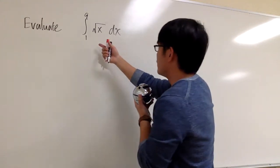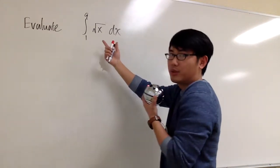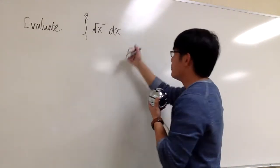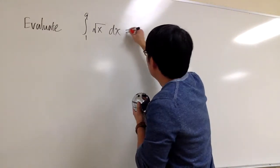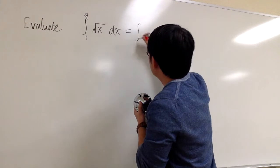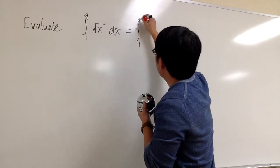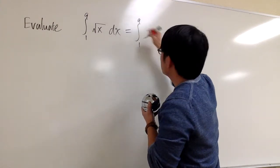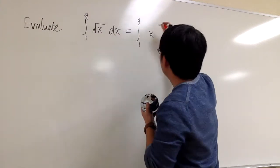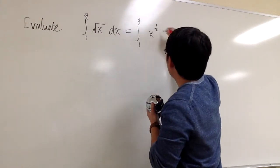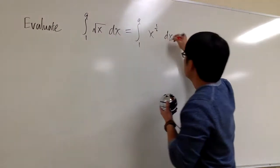In this case, we have to use the reverse power rule because we are doing integration. So let's write this as the integral from 1 to 9 of x to the 1/2 power dx.